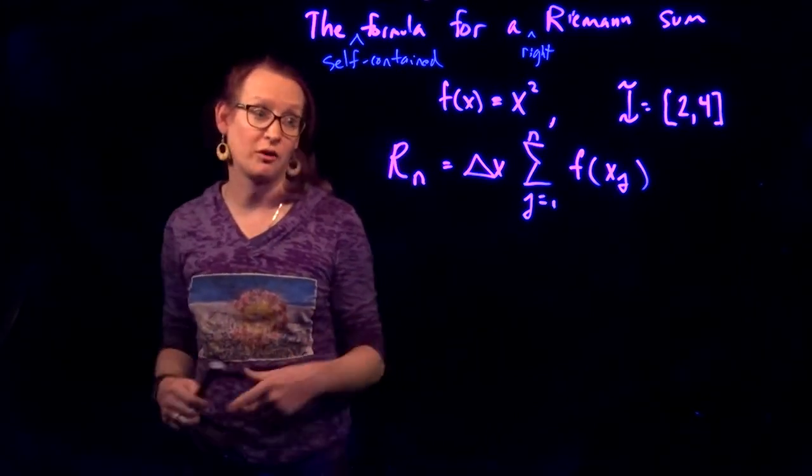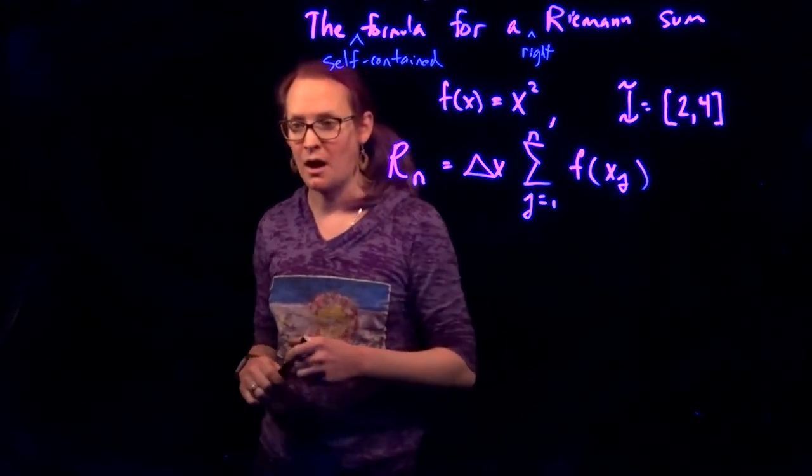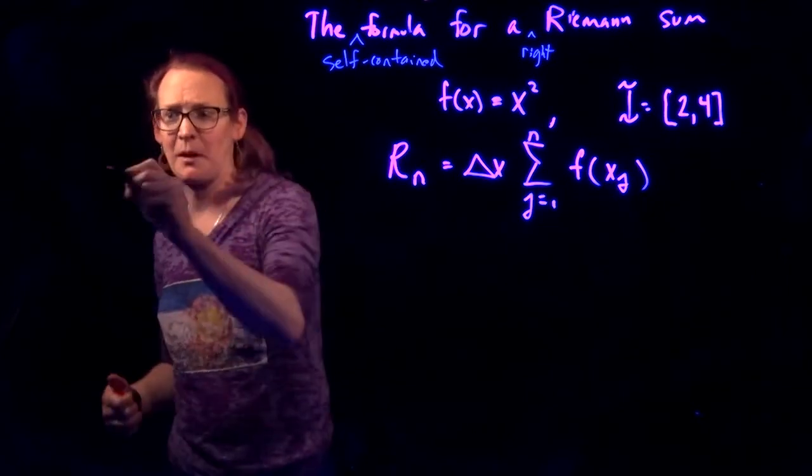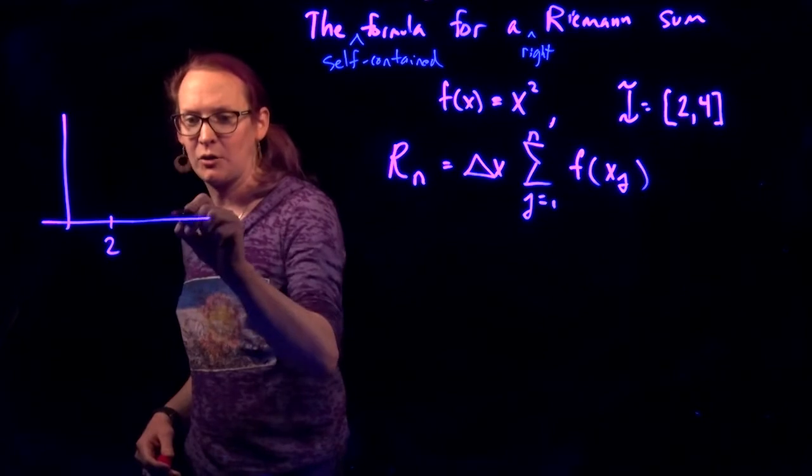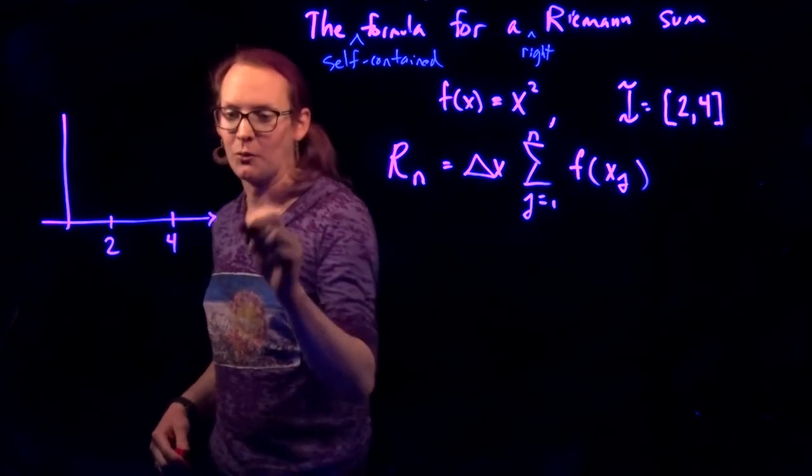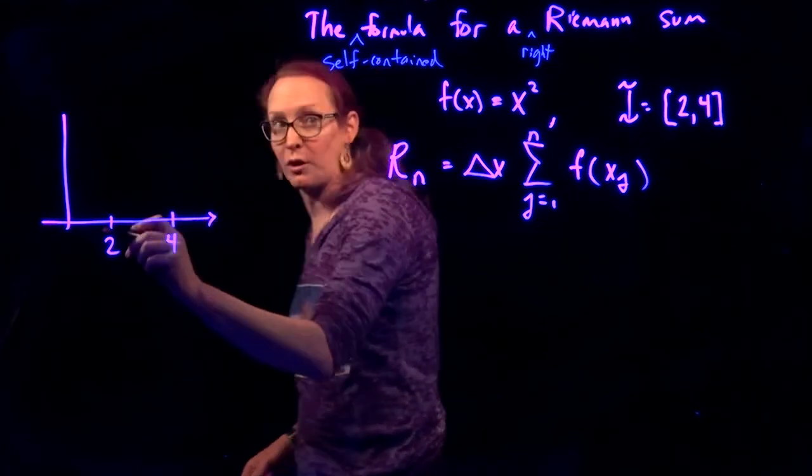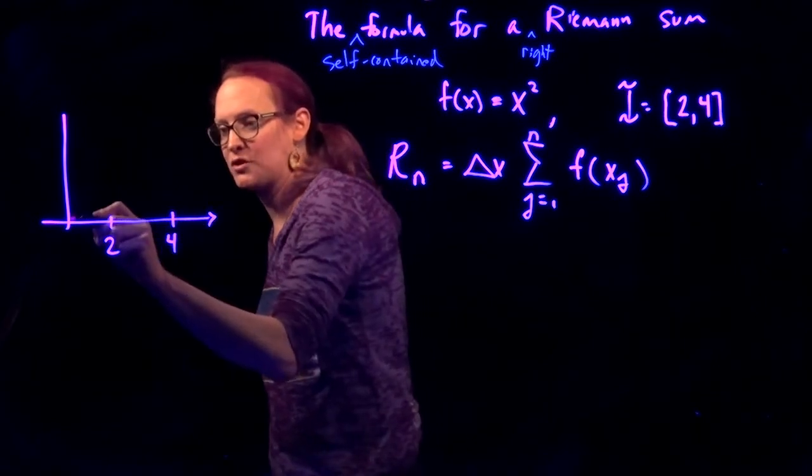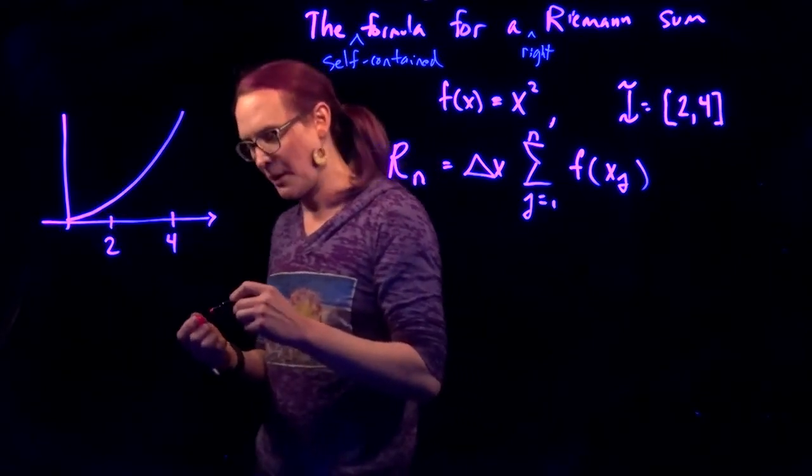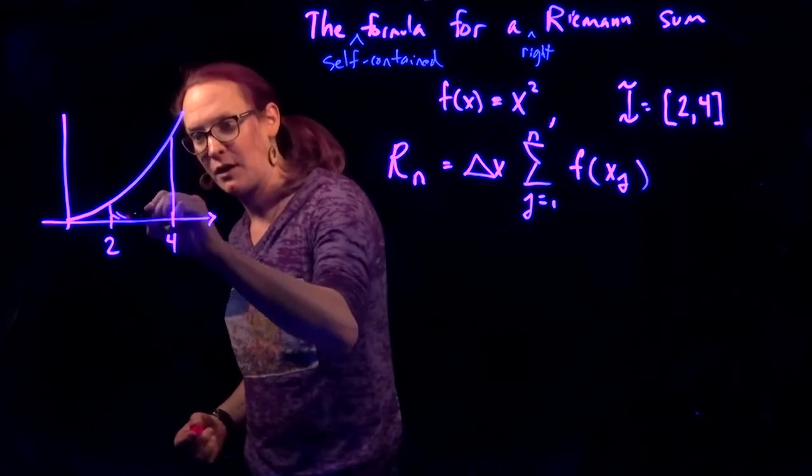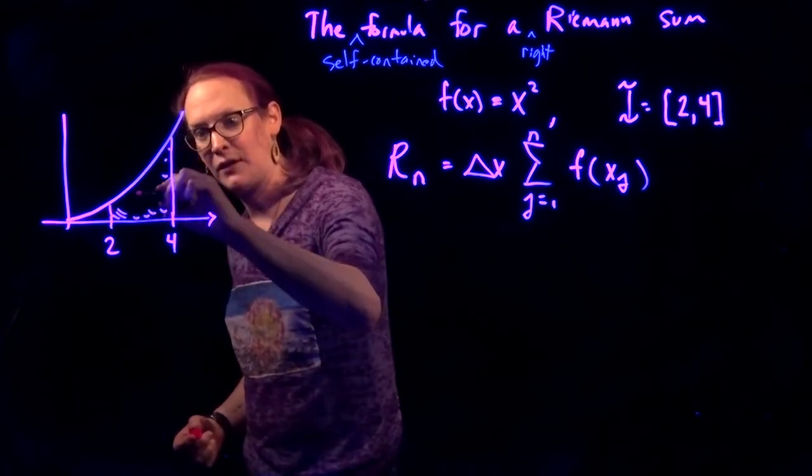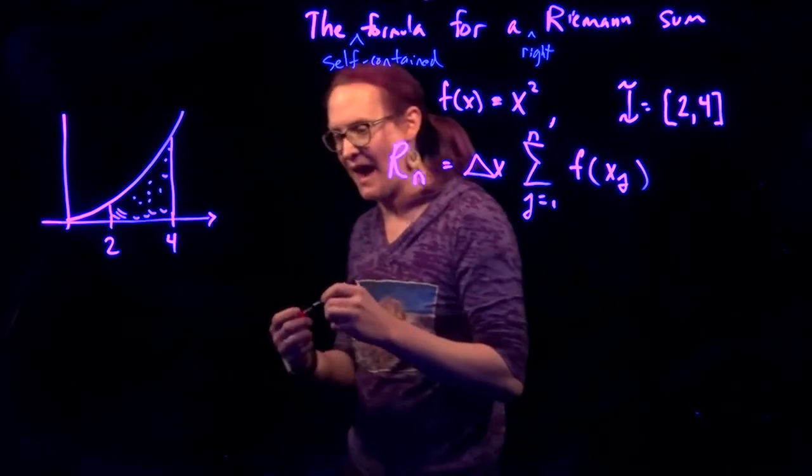So I'm going to draw a little number line and a sketch of my function. So here's some axes. We're interested in the interval from 2 to 4, and my function is x squared, which is a parabola. So there's my parabola, and we're interested in this area inside of here.